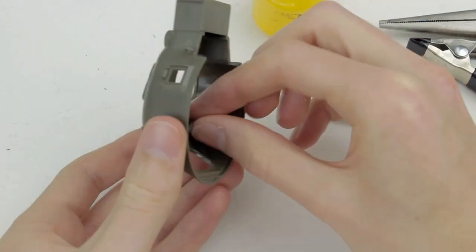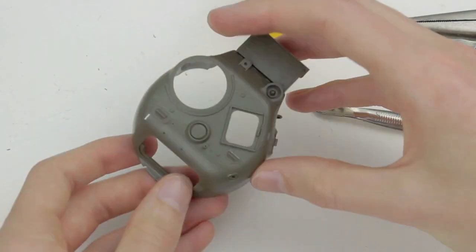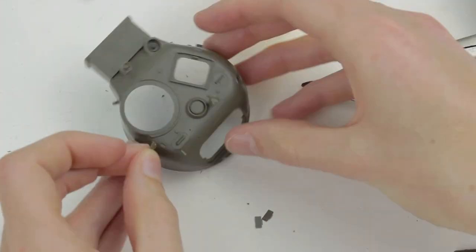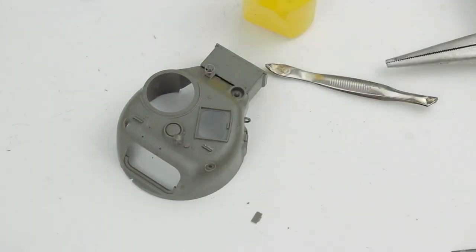On the turret I again temporarily added the opaque periscopes to be replaced with the clear ones after the kit is painted. The searchlight comes with a clear lens which I will add after I've painted the kit.